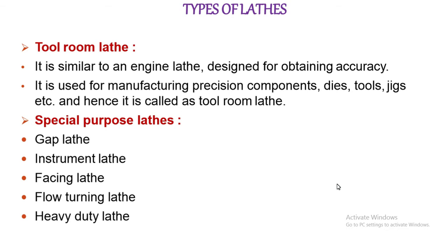Gap head lathe — in this lathe, the section of the bed adjacent to the headstock is removable. It is used to swing extra large diameter workpieces. Other special lathes include instrument lathe, facing lathe, follow turning lathe, and heavy duty lathe.